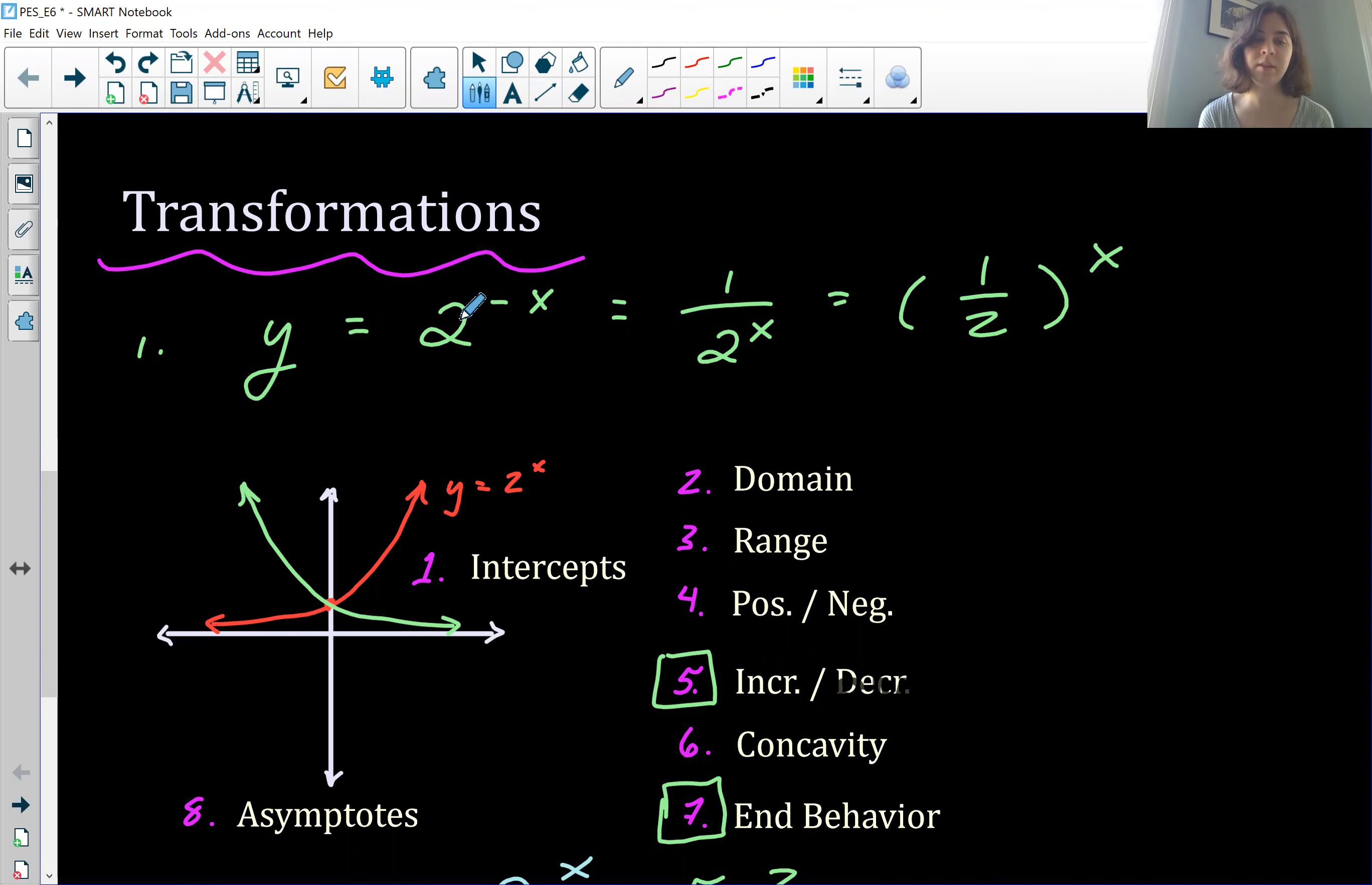So 2 to the negative x is the same as 1 over 2 to the x. And so you can factor out the x on the bottom here, and you can have 1/2 to the power of x. Because one to the power of anything is just going to be one, so we're able to kind of factor out that x.